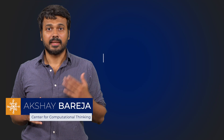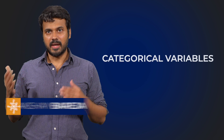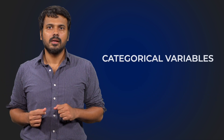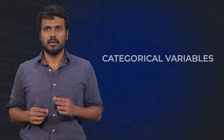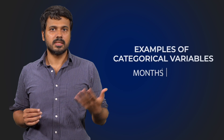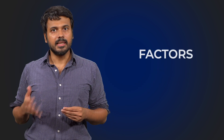In this video, you will learn about categorical variables and factors, which are the variable type used in R to handle this type of data. Categorical variables are variables that have a fixed and known set of possible values, according to Hadley Wickham's R for Data Science. Examples include months of the year and gender. In R, we use factors to work with categorical variables, meaning that we tell R what a categorical variable is by storing it as a factor.